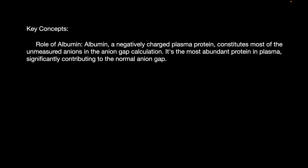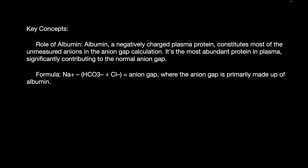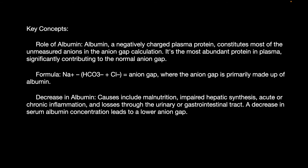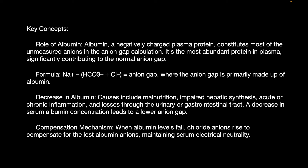Albumin is a negatively charged plasma protein that constitutes most of the unmeasured anions in the anion gap and is the most abundant protein in the plasma. Decreased albumin can result from malnutrition, impaired hepatic synthesis, acute and chronic inflammation, and losses through the urinary and GI tract. A decrease in serum albumin leads to a low anion gap, as chloride ions rise to compensate, maintaining serum electroneutrality.